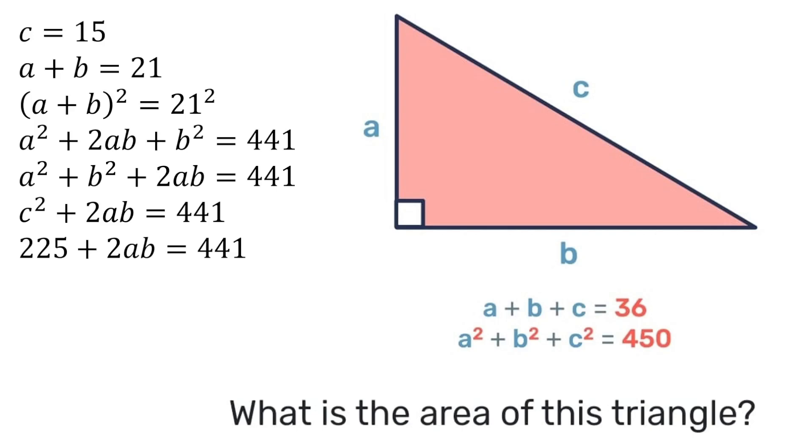So that means that 2ab will be 441 minus 225, which is 216. So ab will be 216 divided by 2, which gives us that ab is 108.